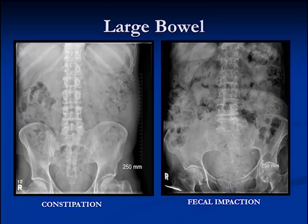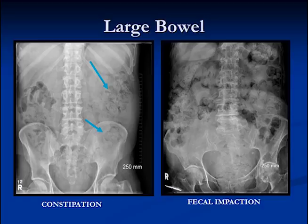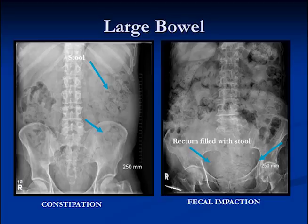Often when we look at plain films of the abdomen, we're going to see fecal material. On people with constipation, there's usually more stool than there should be — you can see the black part incorporated within the white part like little bubbles — this is stool or fecal material, and this patient is probably constipated. When someone is fecally impacted, they have stool throughout their large bowel, and in particular in their rectum. Here you can see the rectum is greatly distended with amorphous material that has air within it — this is fecal impaction.